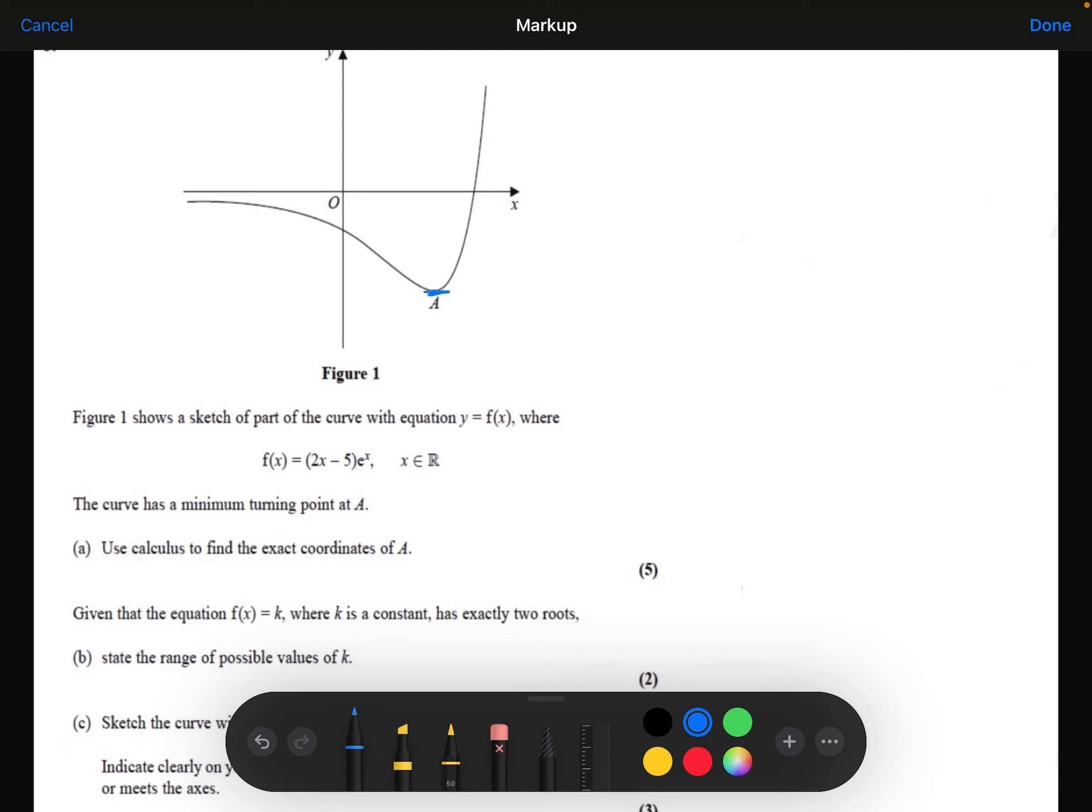So point A, minimum turning point, I know that's where dy by dx is equal to 0. So I need to do some differentiation and make it equal to 0.